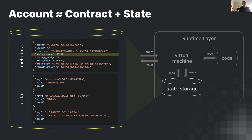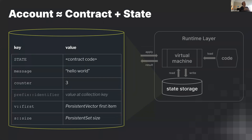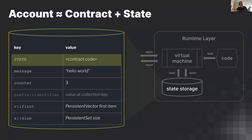You have to pay for storage through storage staking, where tokens are locked up at a price of 10 NEAR per megabyte of data. Data is stored as key-value pairs — base64 encoded — and the contract code lives in a special key called 'state' for both Rust and AssemblyScript contracts (singleton pattern). Other things you store are just key-value pairs, and you get abstractions like PersistentVector and PersistentSet on top of that.